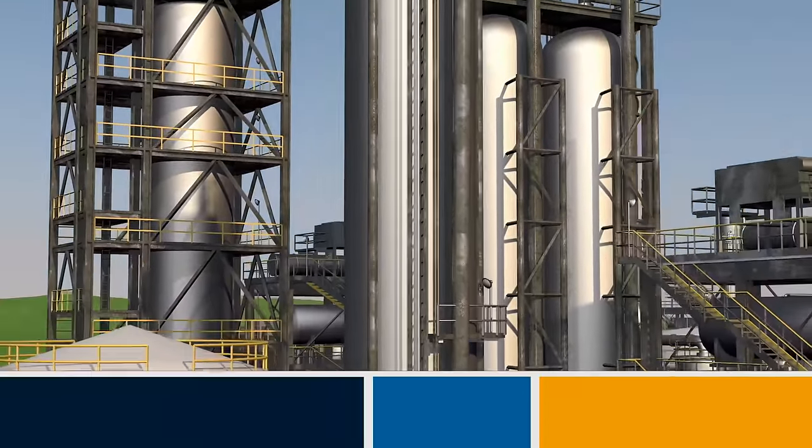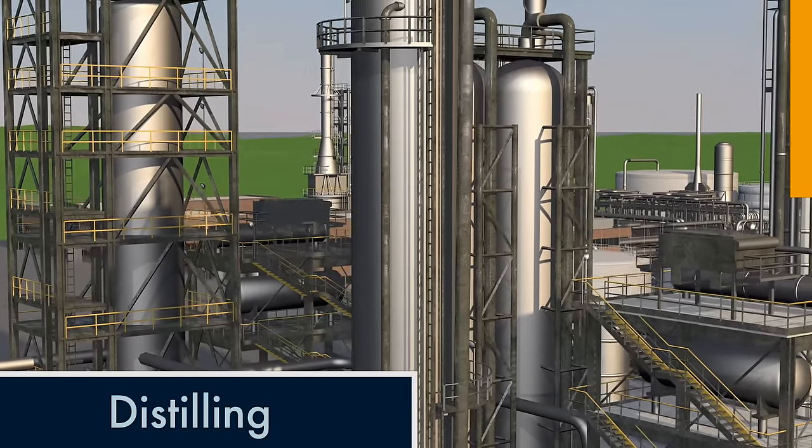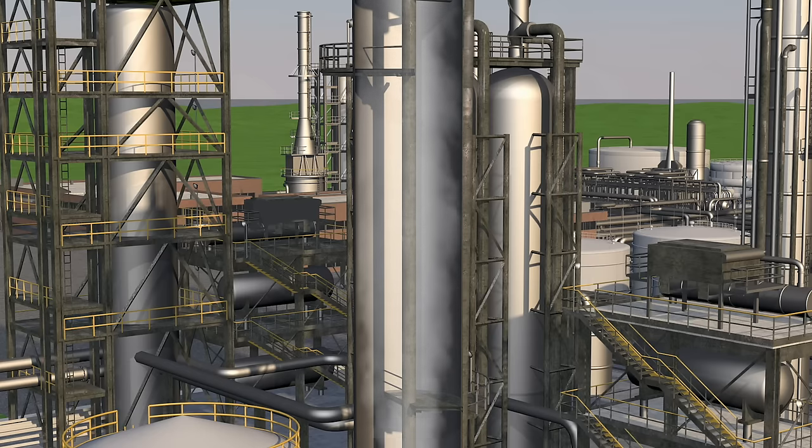Refining begins with a process called distilling. After oil is superheated, it becomes vapor. The vapor is fed into the distillation unit. As it rises and cools, the vapor turns back into a liquid.